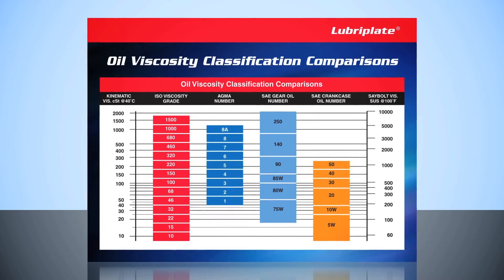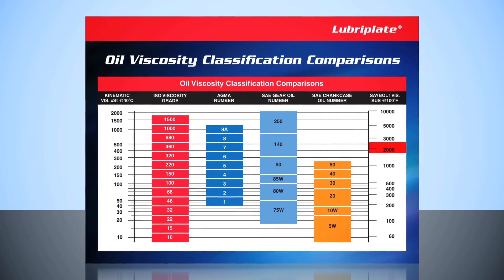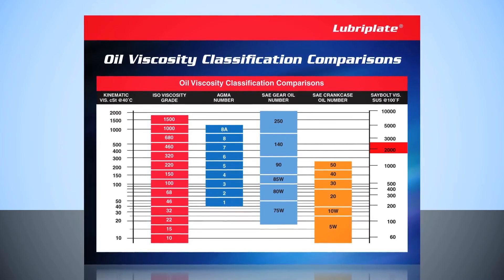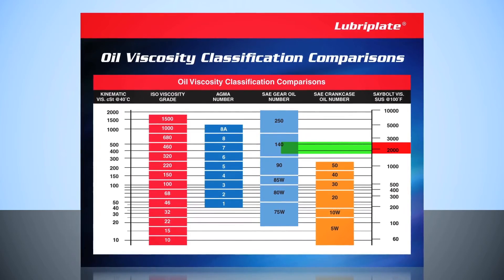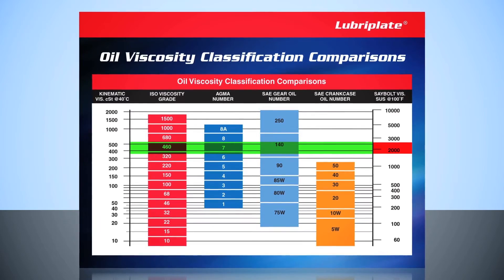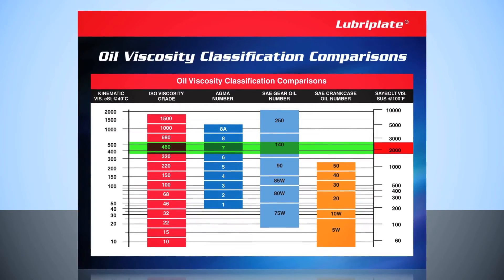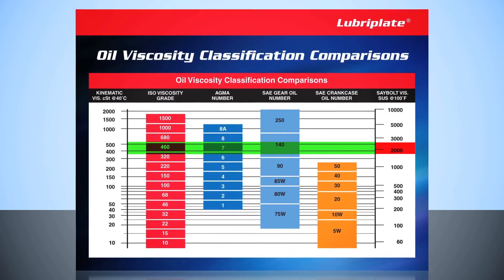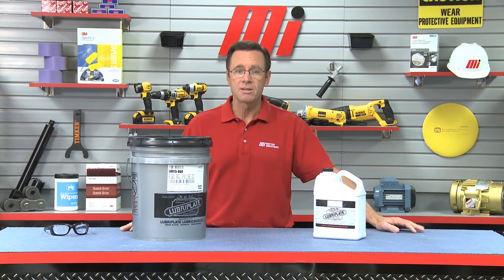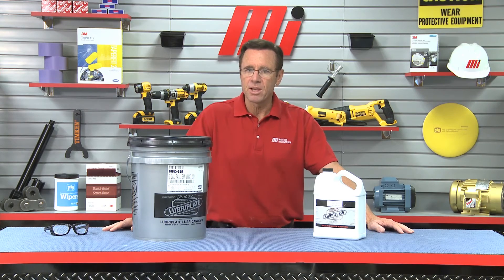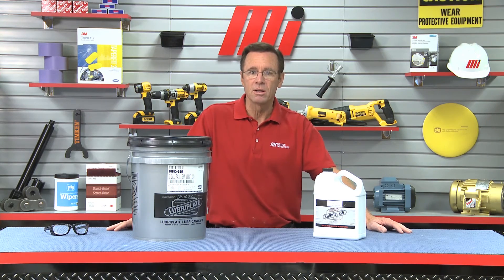Let's try another example from a different starting point. Let's say you have an oil and all you know is that the oil has 2000 SUS at 100 degrees Fahrenheit. We can look on the chart and tell that it is an AGMA 7 gear oil and it's also an ISO 460 oil. But you've got to be really careful, because you don't want to mix numbers up and assume that just because it has a number on it that it's in the same classification system. If you mix up classification systems, you could wind up using an oil that has less than half the viscosity that you need.